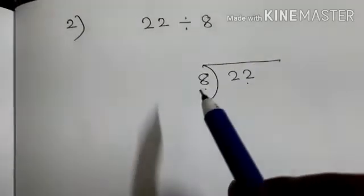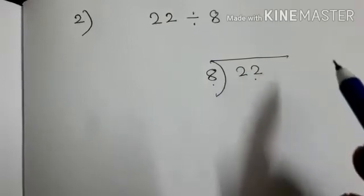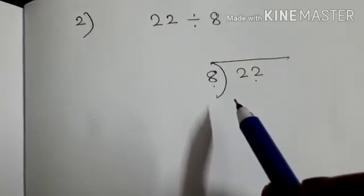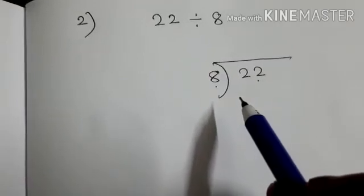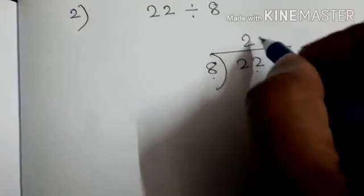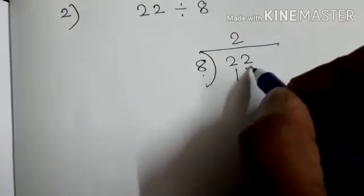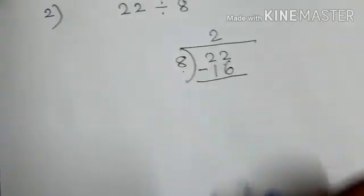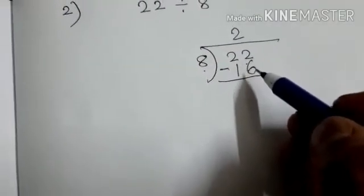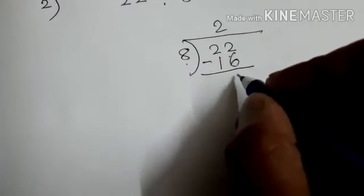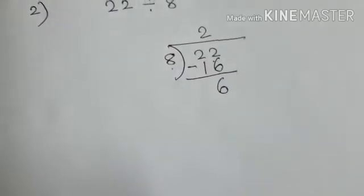So among 16. 8 2's are 16. And 8 3's are 24. Which is less than 22. 8 2's are 16. So we will write here 2. 8 2's are 16. And we will subtract. And when we subtract 16 from 22 we get 6 as remainder.